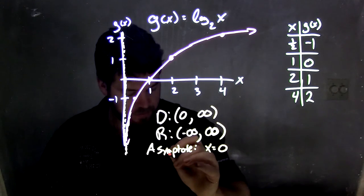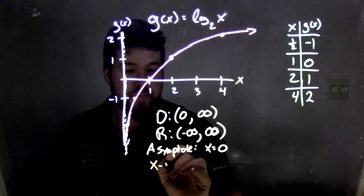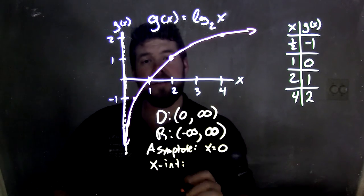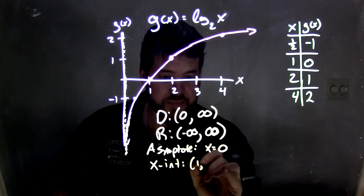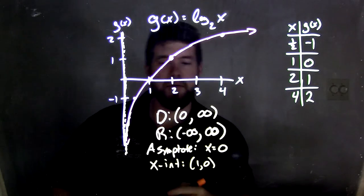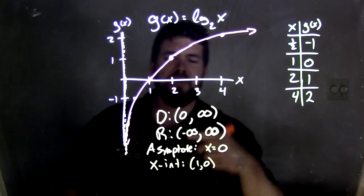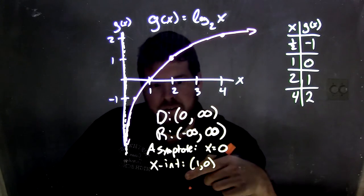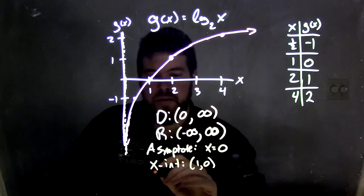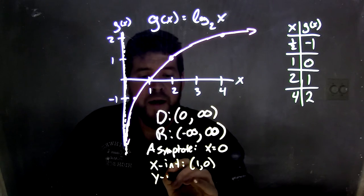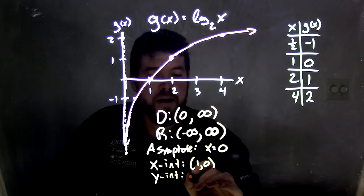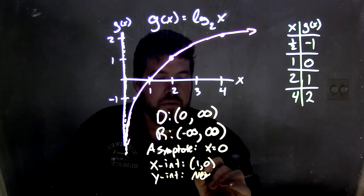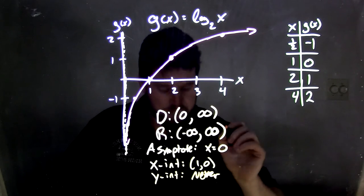And our y-intercept, or sorry, our x-intercept, our x-intercept happens at one, one comma zero. x equals one, and it's right there. You don't necessarily always have to put the y-value, because you know every x-intercept has the same y-value, but it's good to put it there. And our y-intercept, well, that never occurs. It never crosses our y-axis.